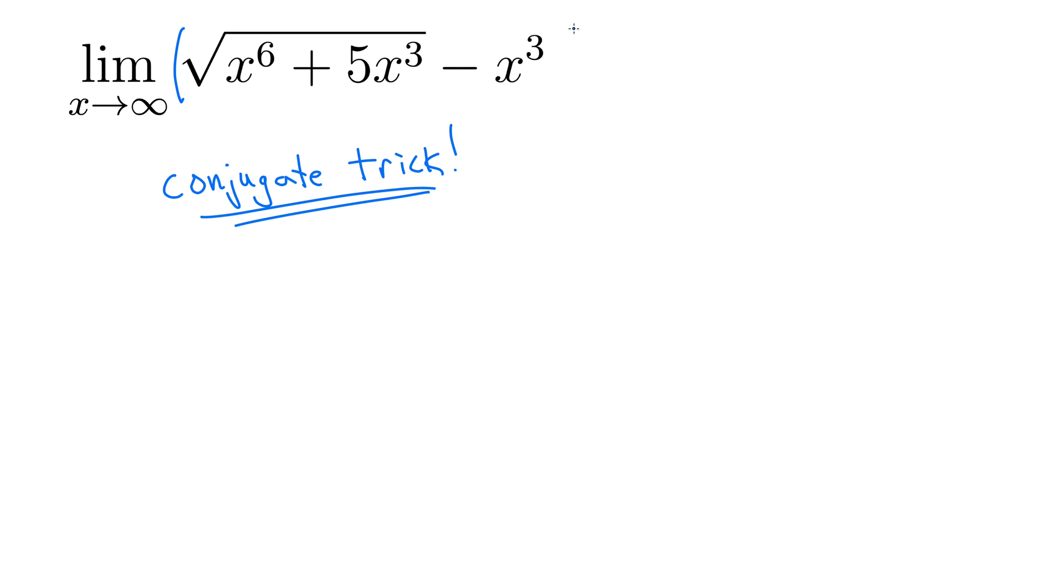So we'll take this whole deal here, multiply by the square root of x to the 6 plus 5x cubed, but then we'll write it as plus x cubed. In parentheses, but we can't just go around multiplying by terms like that. We can only multiply by one.